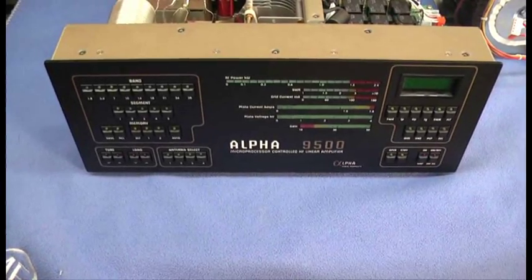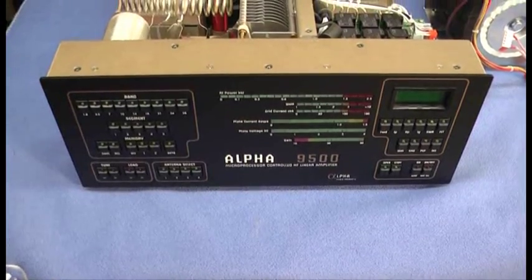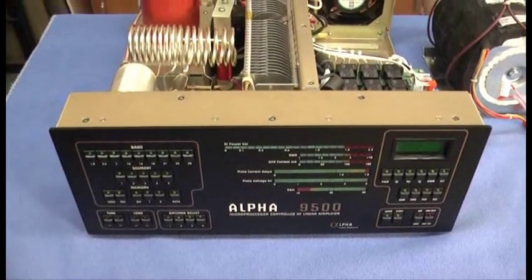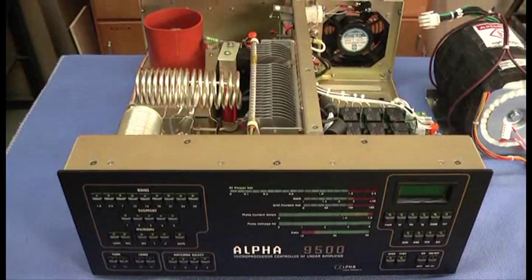Let's take a quick look inside of the Alpha 9500 now that I have the cover removed. The amplifier is divided into two halves: the power supply and circuitry half, and then the RF deck.